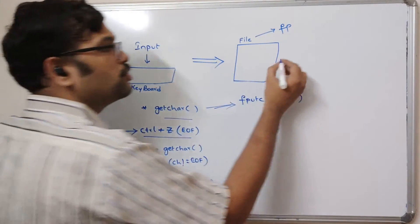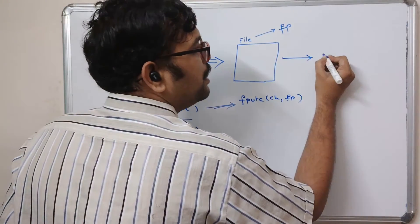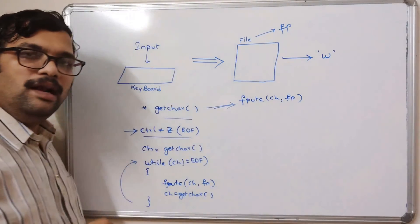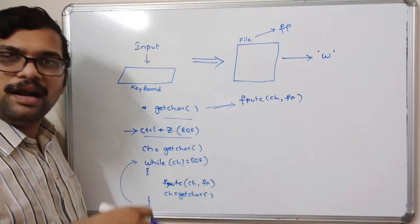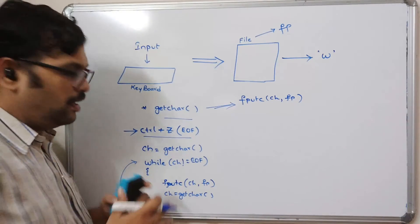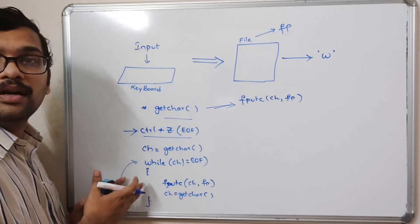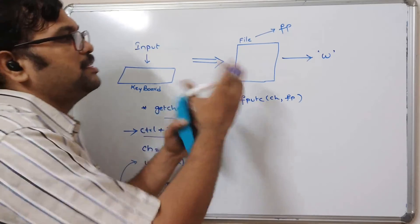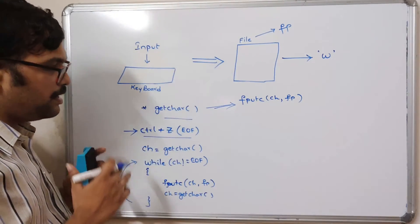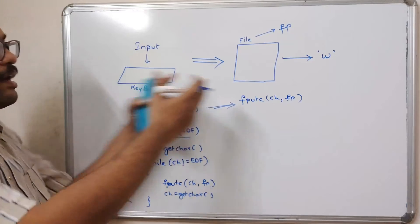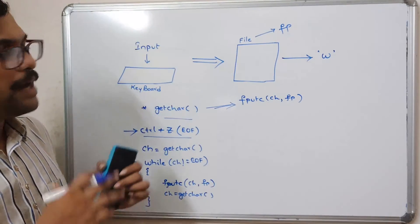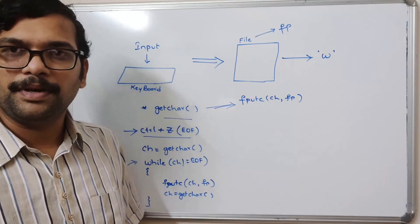Since we are writing data into the file, this file should be opened in write mode. If there is no file, a new file will be created. If there is an existing file, the data will be automatically erased and replaced with whatever data you provide from the keyboard. Now I will show you the implementation — let's move on to the compiler.